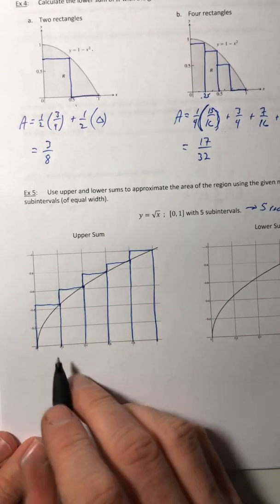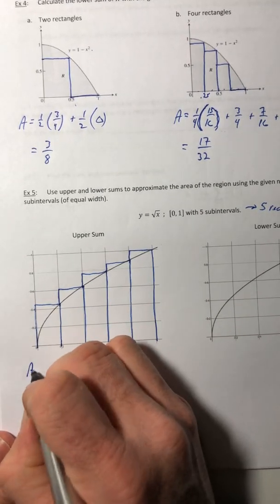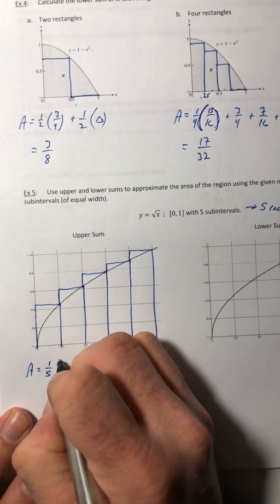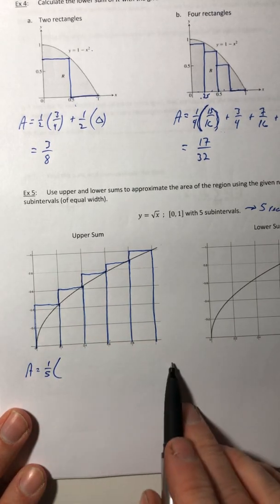Okay, so each base again is a fifth. So I'm going to pull that one fifth out and then just add up the heights.